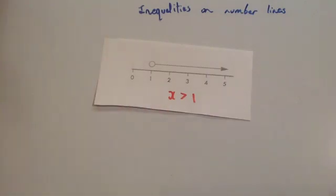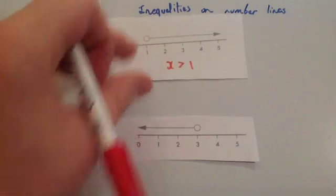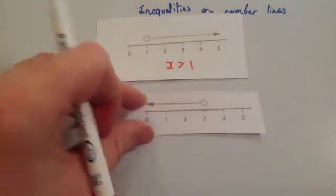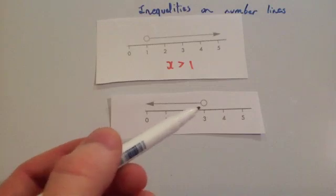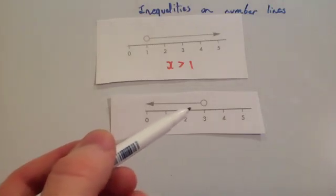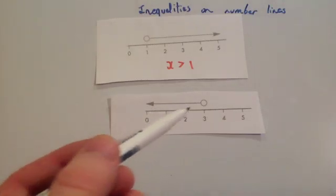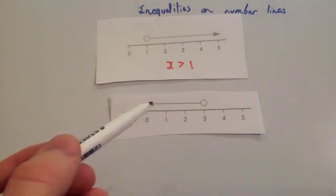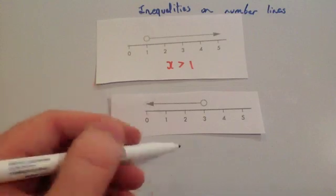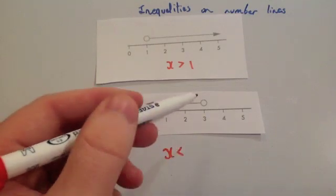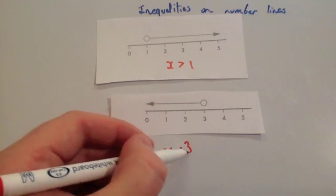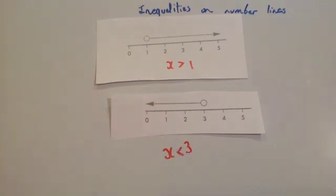Let's have a look at another inequality. This time we've got a hollow circle, so it's going to be just less than or bigger than. Because it's pointing to the left, to the smaller numbers, it's going to be less than. So you've got x is less than, and because it's at 3, it's going to be x is less than 3.